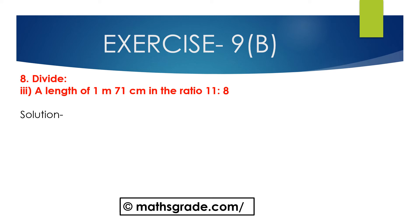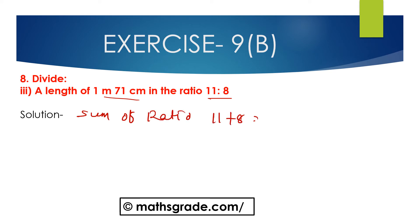Now question 3: Divide a length of 1 meter 71 centimeters in the ratio of 11 is to 8. We have to divide 1 meter 71 centimeters, that is 171 centimeters — since 1 meter equals 100 centimeters, so 100 plus 71 is 171 centimeters. We have to divide this in the ratio 11 is to 8. First find the sum of the ratio — the total ratio is 11 plus 8, which is equal to 19.